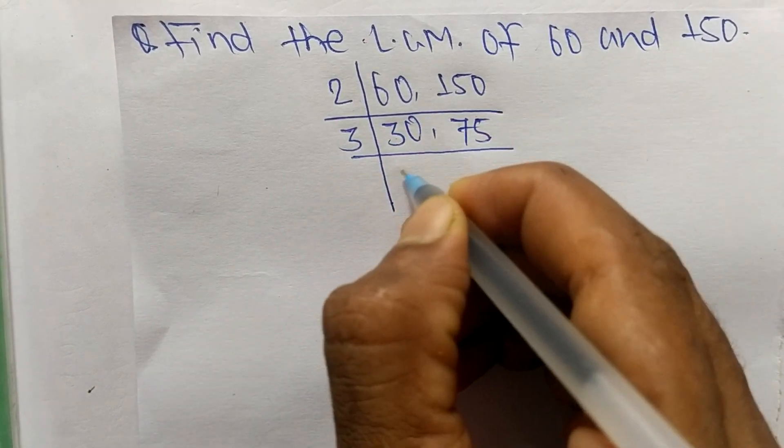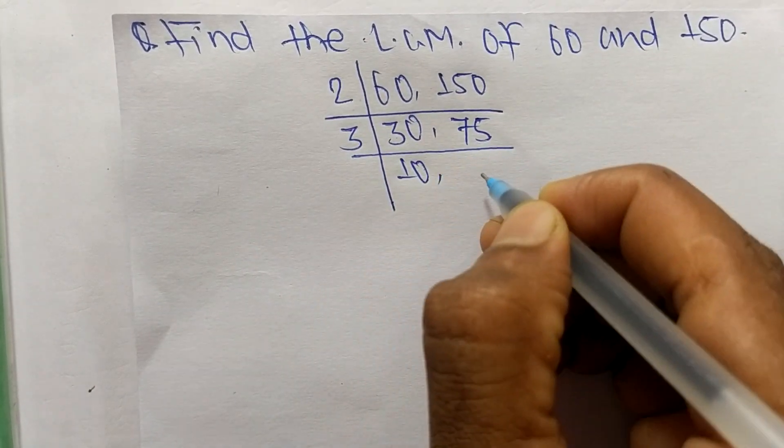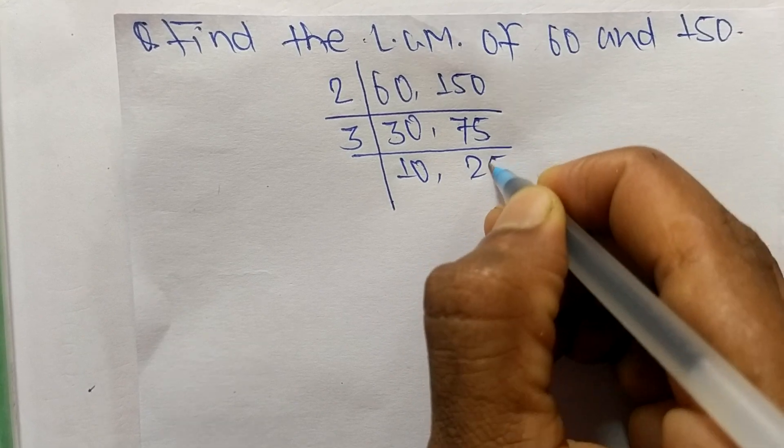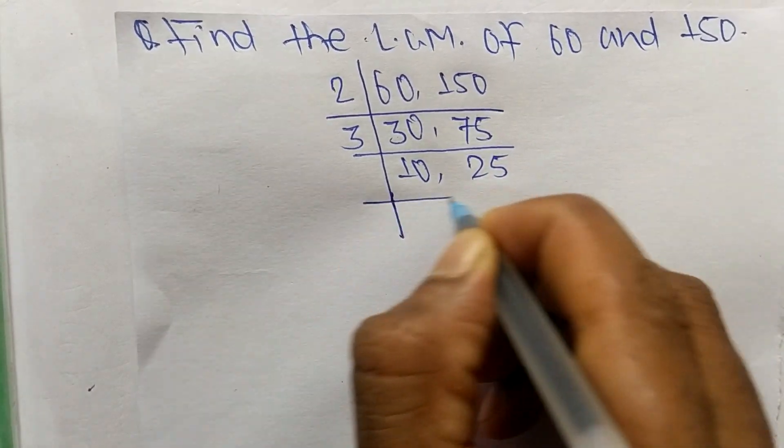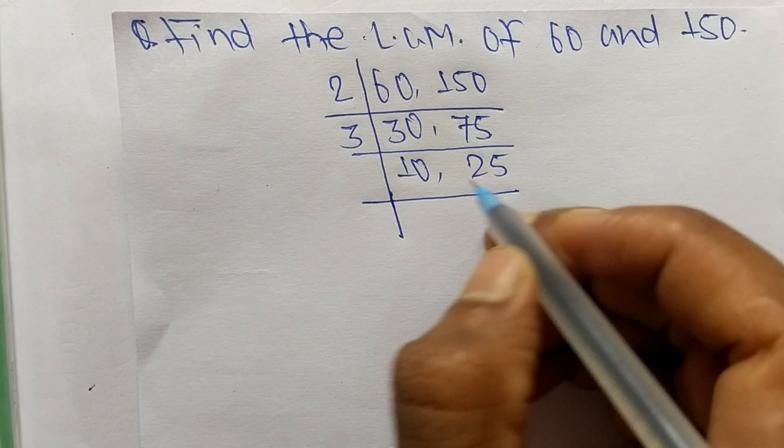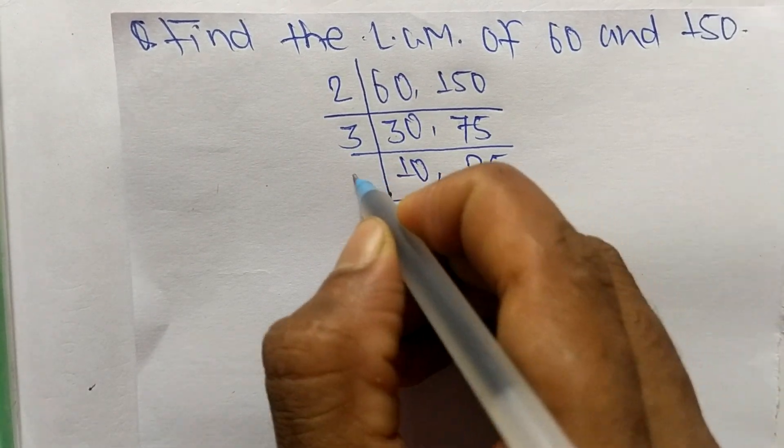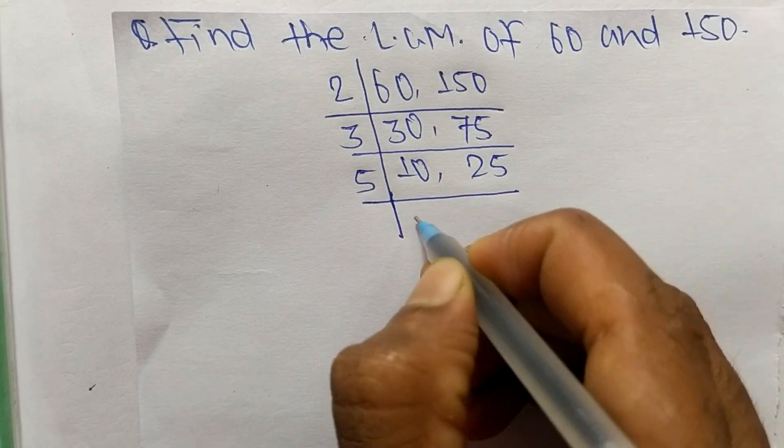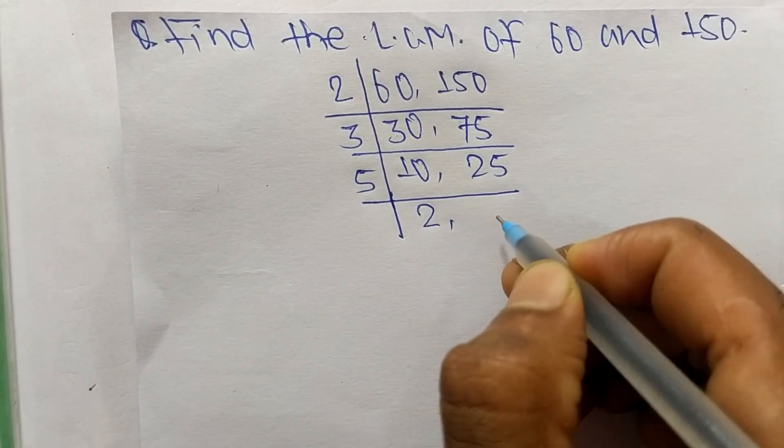Now again we have 10 and 25 which is not exactly divisible by 3, so we take 5 here. 5 times 2 equals 10 and 5 times 5 equals 25.